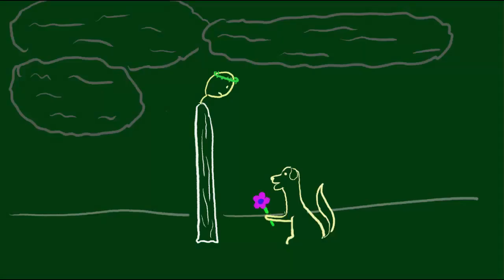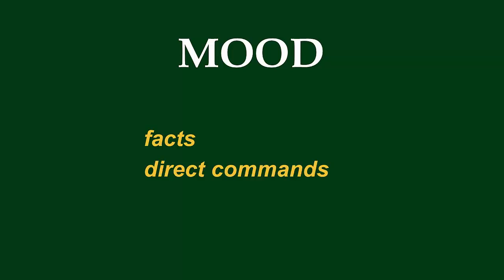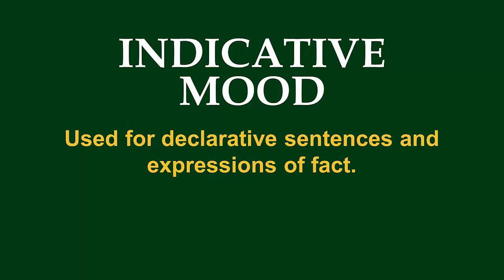First term up: mood. When we're talking about grammar, the word mood doesn't refer to whether you're feeling happy or sad. The word mood, when we're talking about verbs, refers to the type or category of verb form. There are different moods for expressing things like facts, direct commands, and wishes. Right now, all you have to worry about is one single mood — it's called the indicative. The indicative is just a fancy-sounding term that's really pretty simple. The indicative mood is used for declarative sentences and the expression of facts. Most of the time you're talking, you are using the indicative mood — it's pretty much just regular speech.